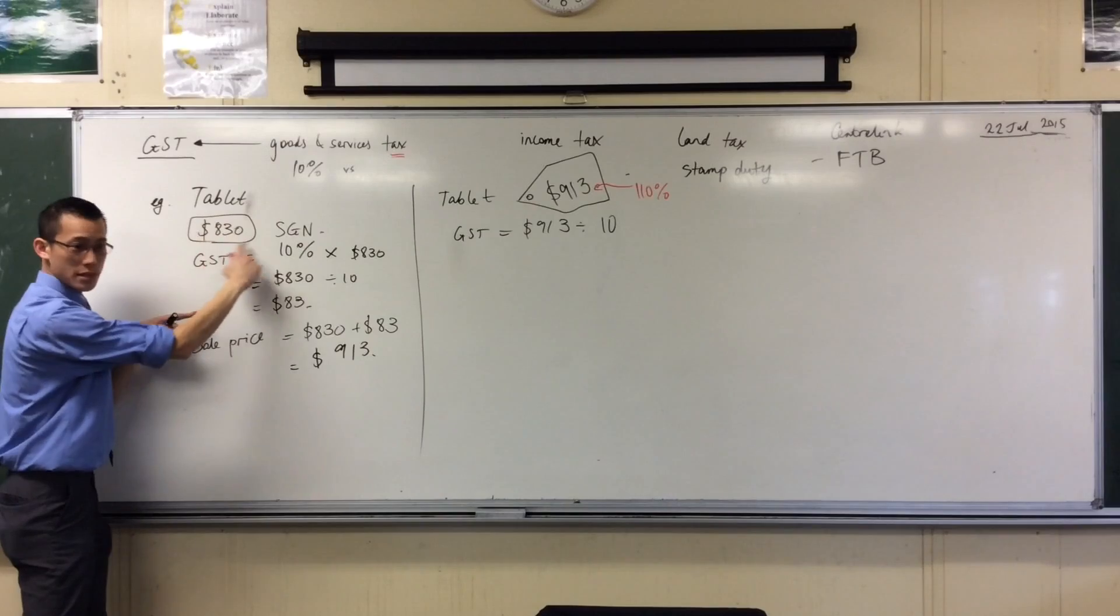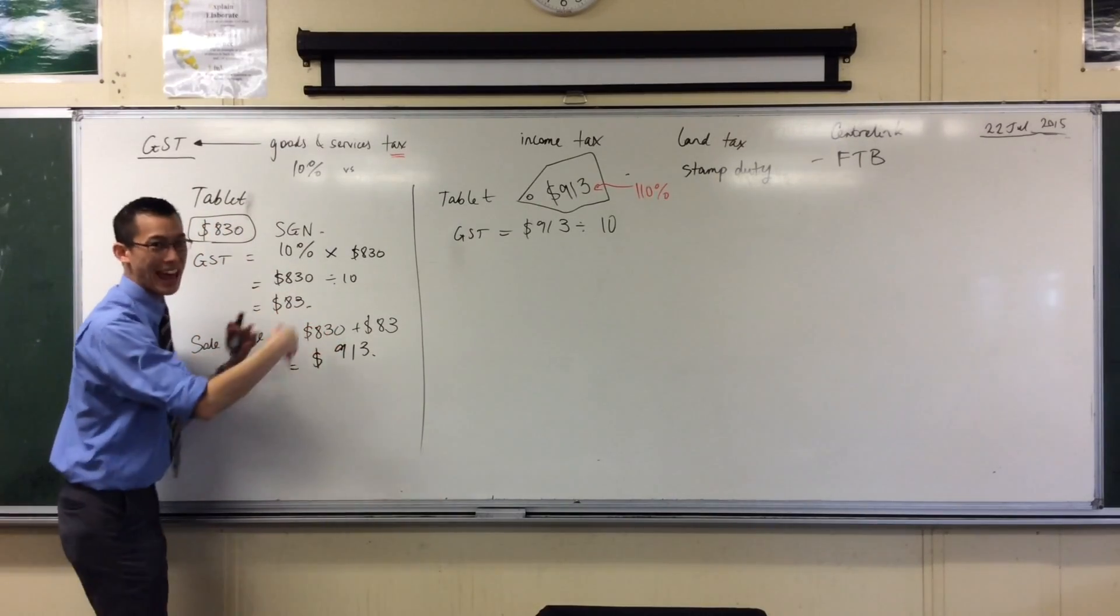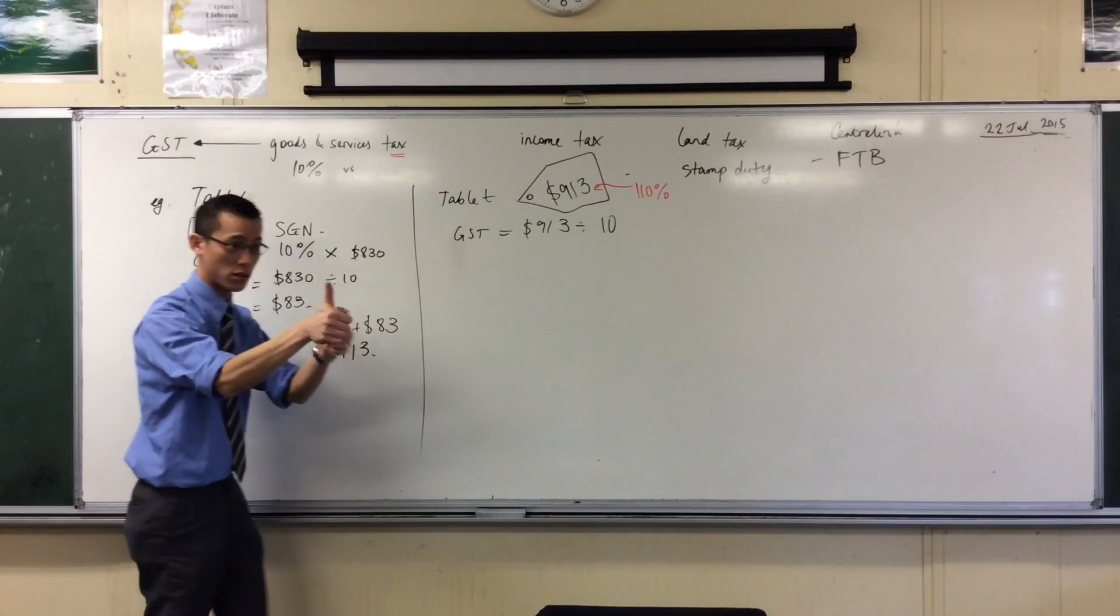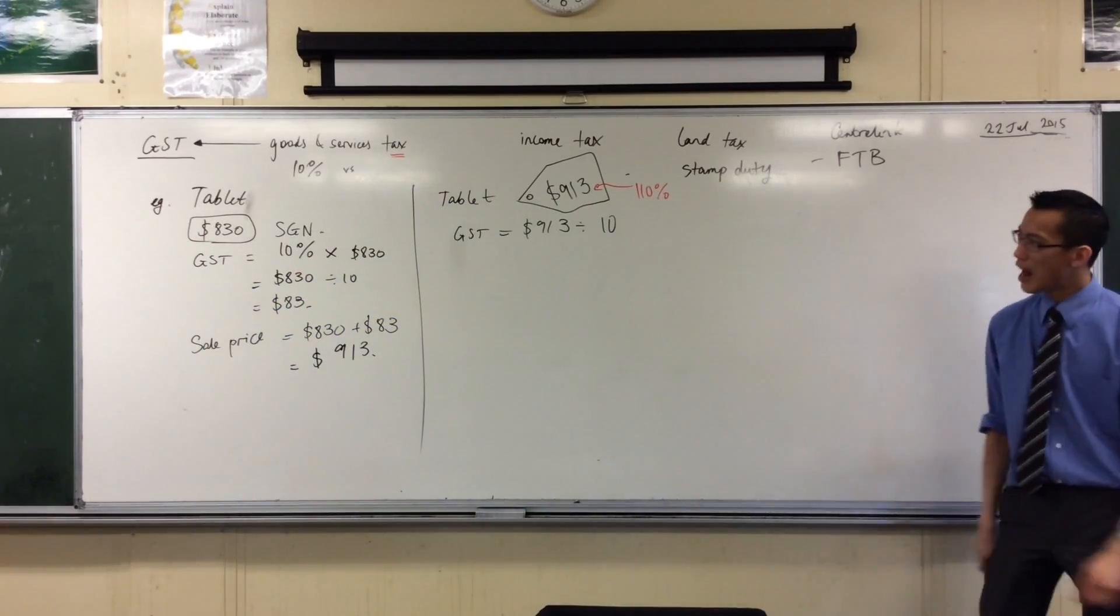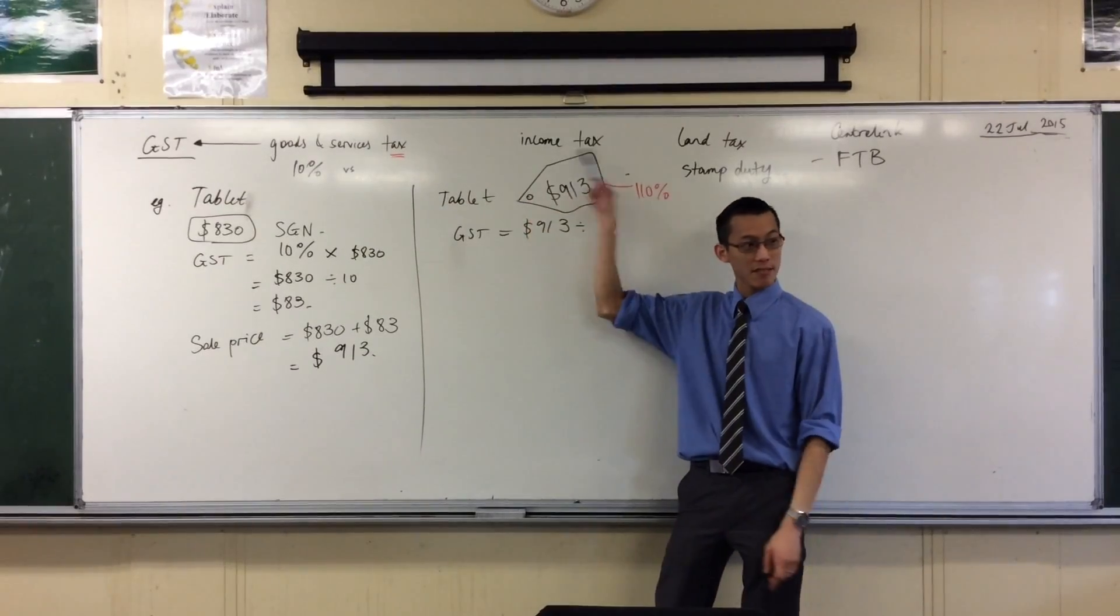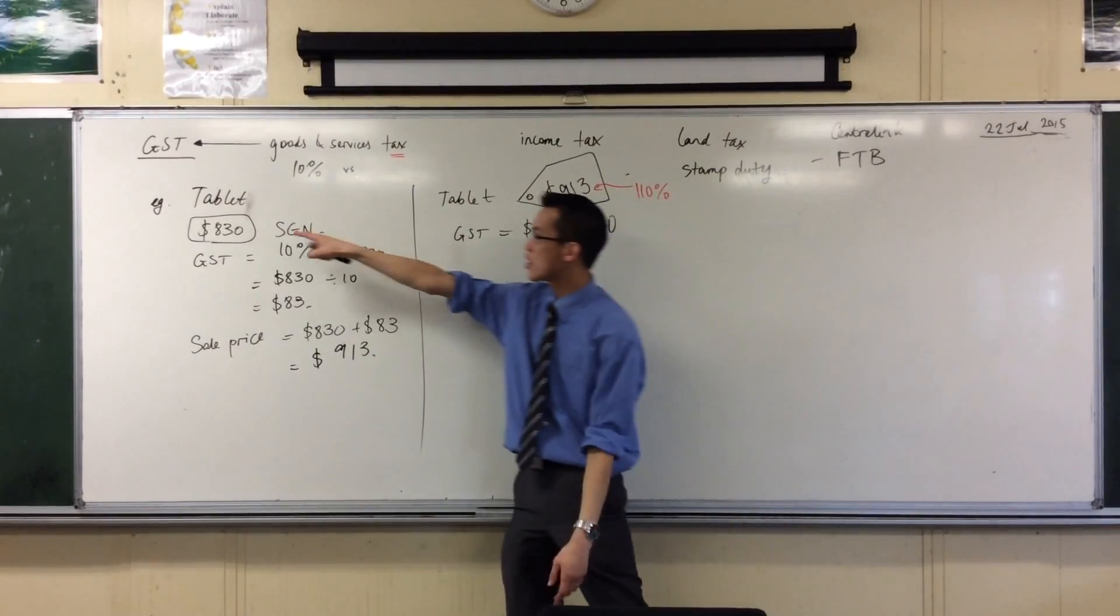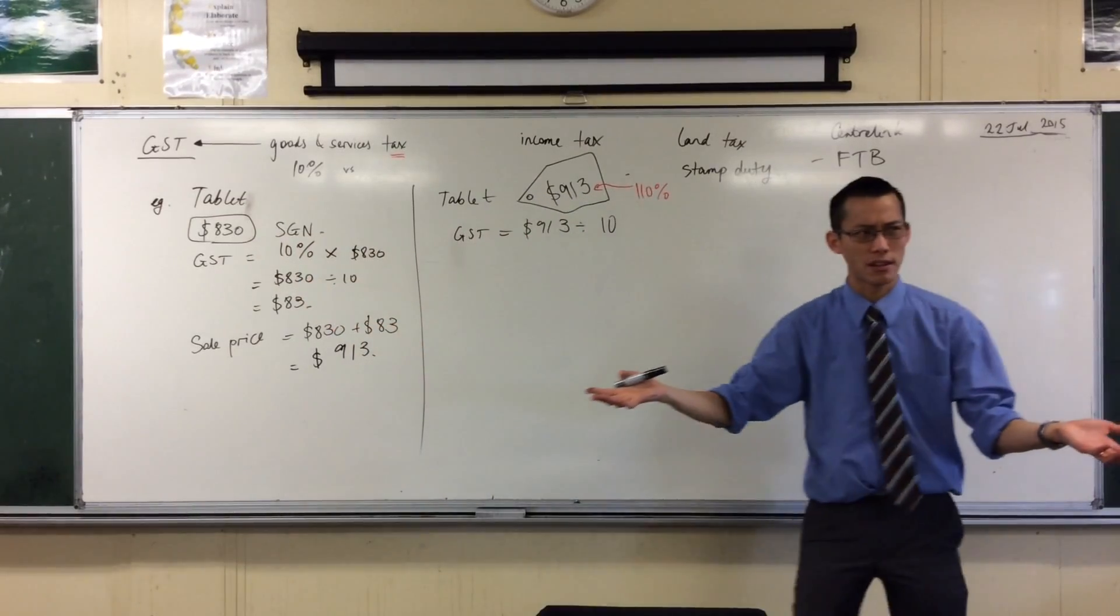So, so far, so good. Now, what? Are we going to get back to the sale price? Well, we've got the sale price. That's the sale price on the ticket. So, I suppose what we want is either the original price or the GST. Once you've got one, you've got the other, don't you?